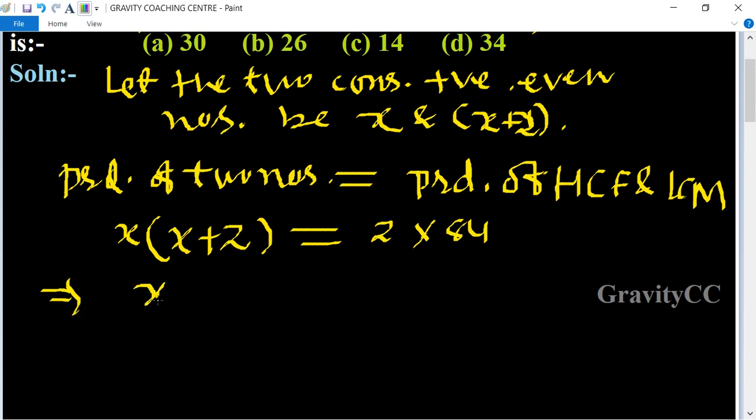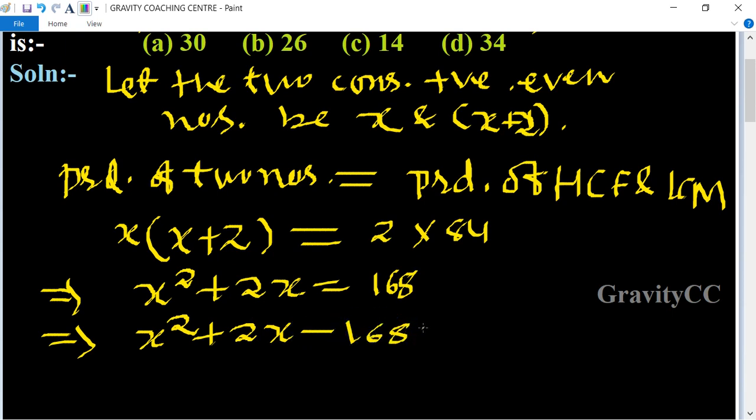This implies that x squared plus 2x equals 168, which implies that x squared plus 2x minus 168 equals 0.